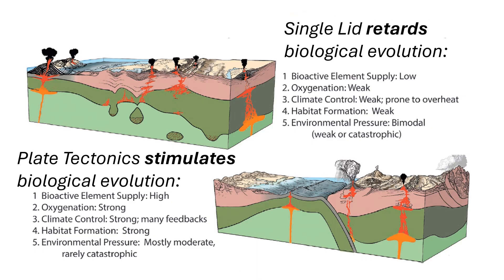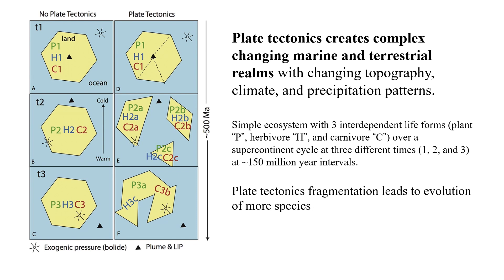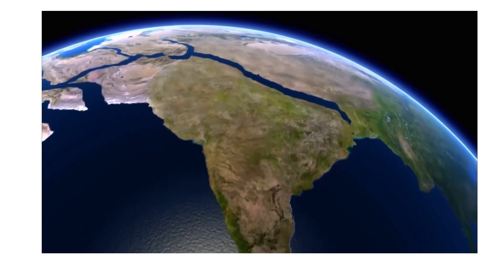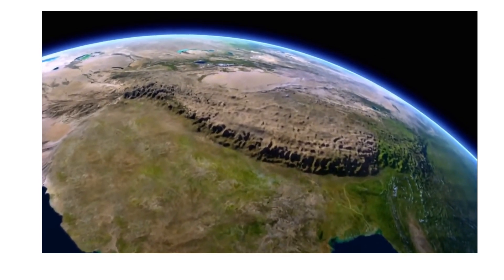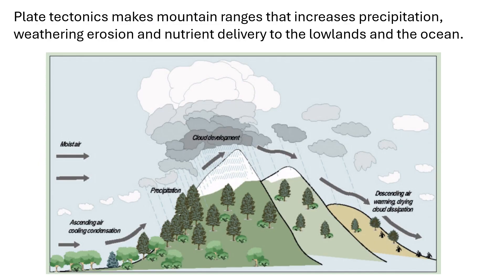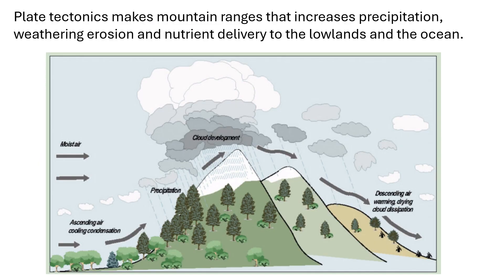Plate tectonics dramatically accelerates the emergence and evolution of complex species in three main ways. First, plate tectonics creates complex changing marine and terrestrial realms with changing topography, climate, and precipitation patterns that stimulate biodiversity. Second, plate tectonics causes greater topographic relief at plate boundaries and continental collision zones. This intensifies precipitation, erosion, and nutrient delivery to lowlands and the ocean.